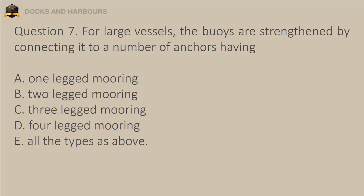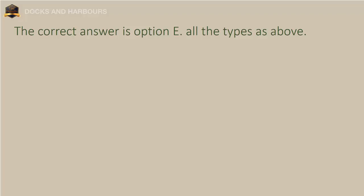Question 7. For large vessels, the buoys are strengthened by connecting it to a number of anchors having: A. One-legged mooring. B. Two-legged mooring. C. Three-legged mooring. D. Four-legged mooring. E. All the types as above. The correct answer is Option C: Three-legged mooring.